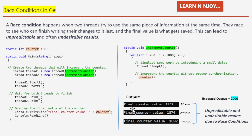Looking at the output: the first run gave 1957, the second run gave 1874, and the third run gave 1892. These outcomes are unpredictable and undesirable — we were expecting 2000, but it's not happening. There is a possibility of getting 2000, but it's unpredictable, and this happened due to a race condition.